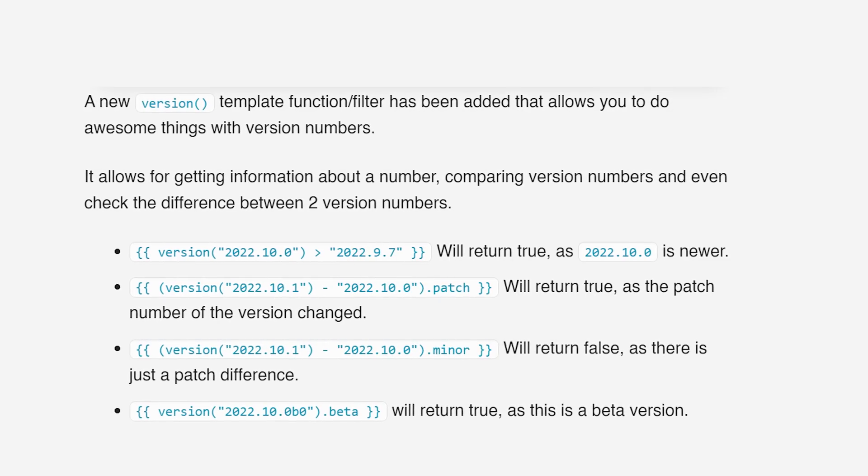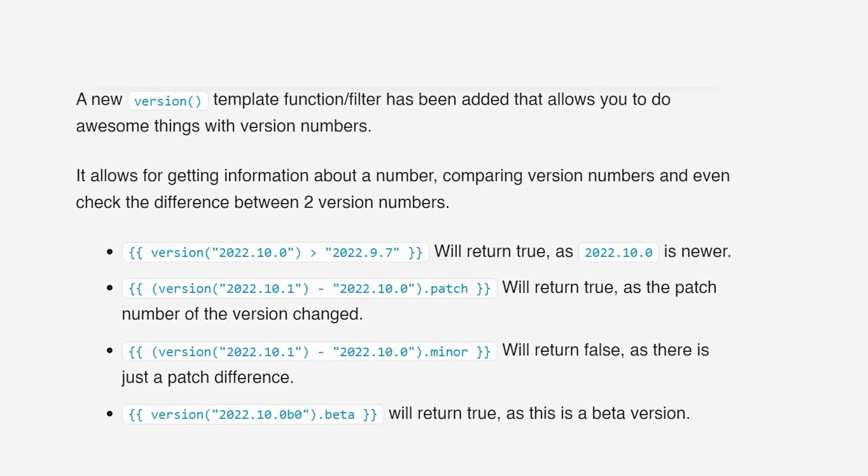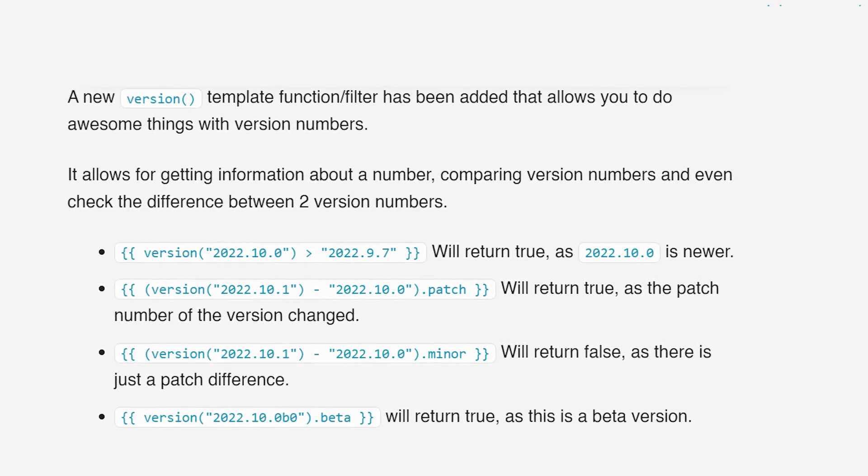Moving on to the smaller but still noticeable updates this month: there is a new template filter for quick and easy calculations on version numbers, which is useful if you want to do more advanced things with the Home Assistant updates feature and allows you to easily compare different version numbers. There's also been work done to unify the styling of all the dialogue boxes throughout the UI to make them more consistent with each other.